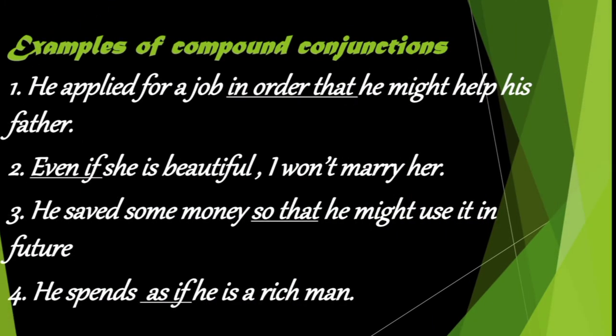Let us see some sentences for compound conjunctions. First: 'He applied for a job in order that he might help his father.' Second: 'Even if she is beautiful, I won't marry her.' Third: 'He saved some money so that he might use it in future.' Fourth: 'He spends as if he is a rich man.' Here the words in order that, even if, so that, and as if are examples of compound conjunctions joining two sentences or clauses.